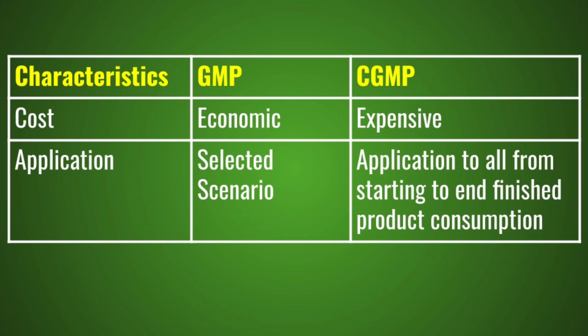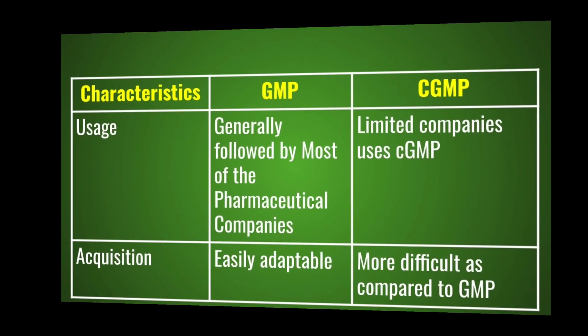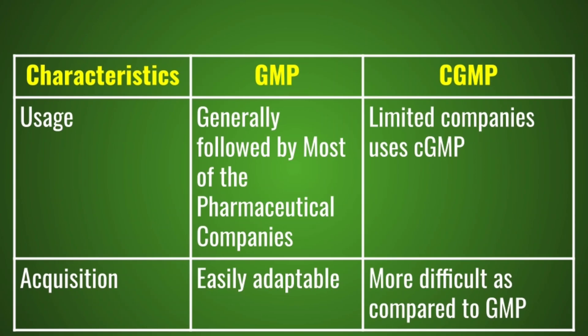CGMP is more expansive than GMP. GMP can be applied in a selected scenario, whereas CGMP application covers all stages from starting to end — from finish product to consumption. Generally, GMP is followed by most pharmaceutical companies, whereas CGMP is followed by only limited companies.